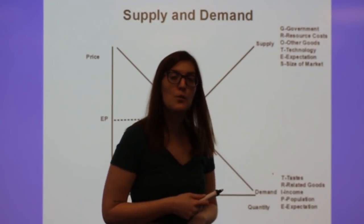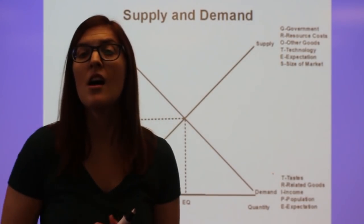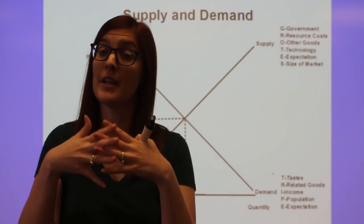Related goods, which is talking about complements and substitutes. Complementary goods are goods that go together. So if the price of apples goes up, the demand for peanut butter goes down.